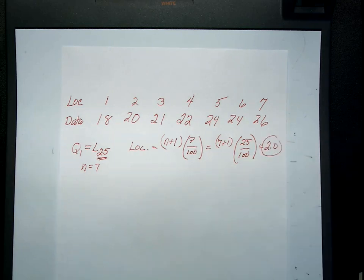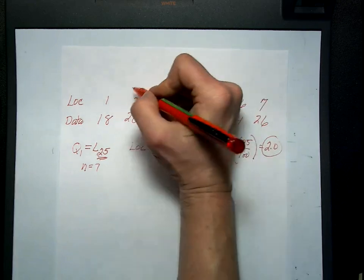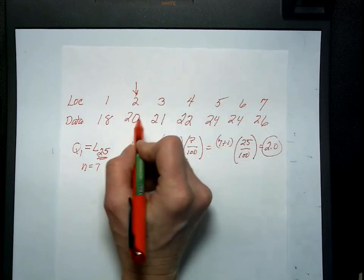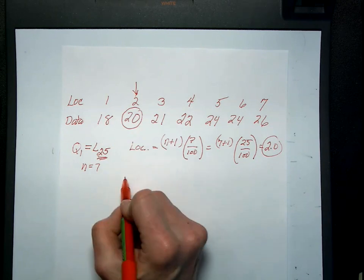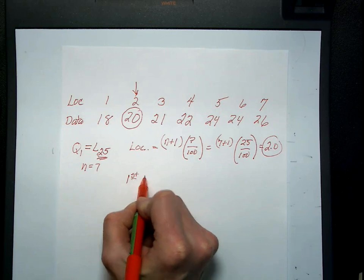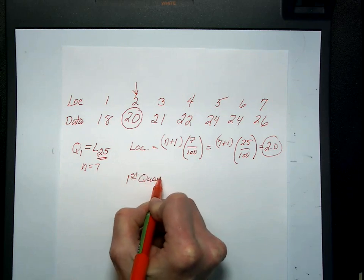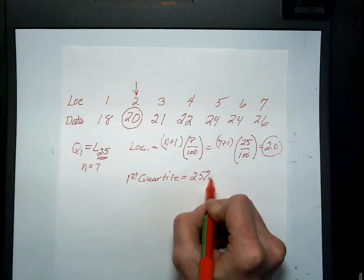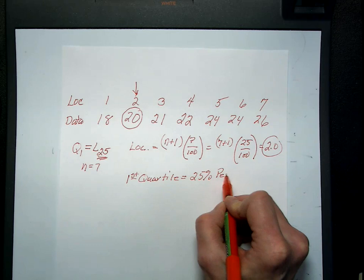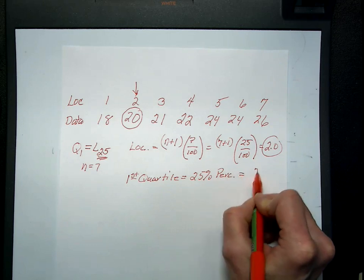This, again, is locating it. So data point 2 is my first quartile, which is my 25th percentile, which is 20.